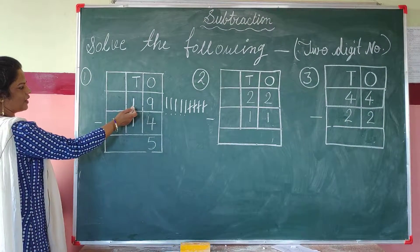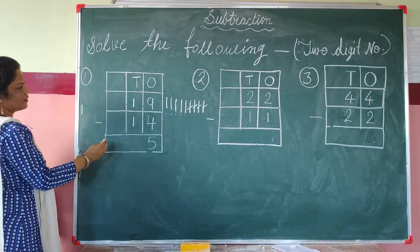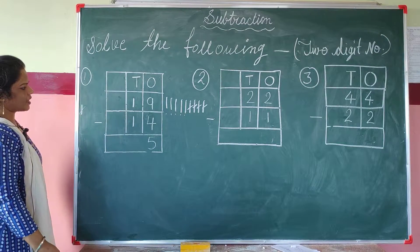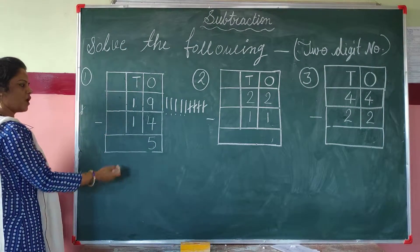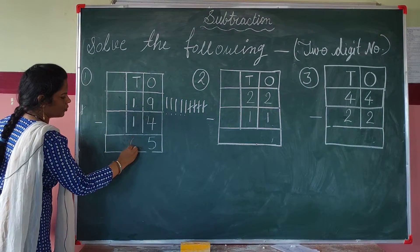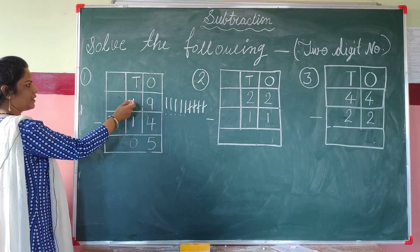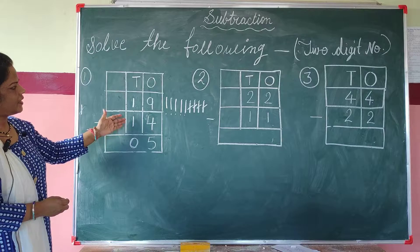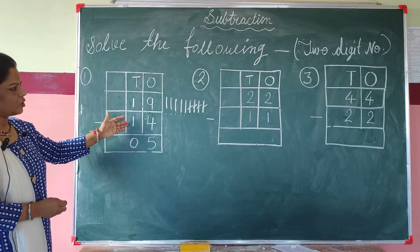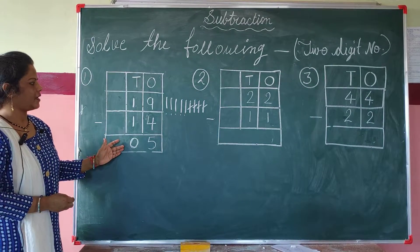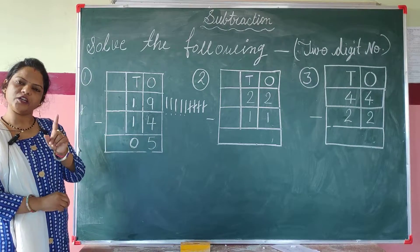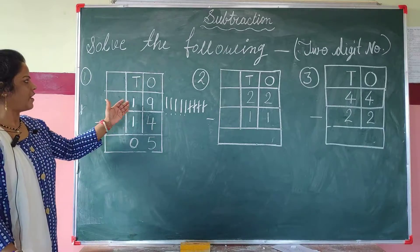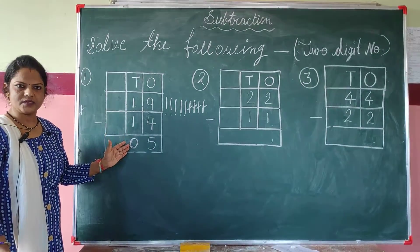We drop 1 line and cut 1 line. How many lines are there? 1. We subtracted 1 from 1, so what is the answer? 0. We write 0 at the 10's place. Children, when the same digits are subtracted — like 1 minus 1 — the answer is 0. For example, if you have 1 toffee and you eat 1 toffee, how many are left? 0. So 1 minus 1 equals 0.